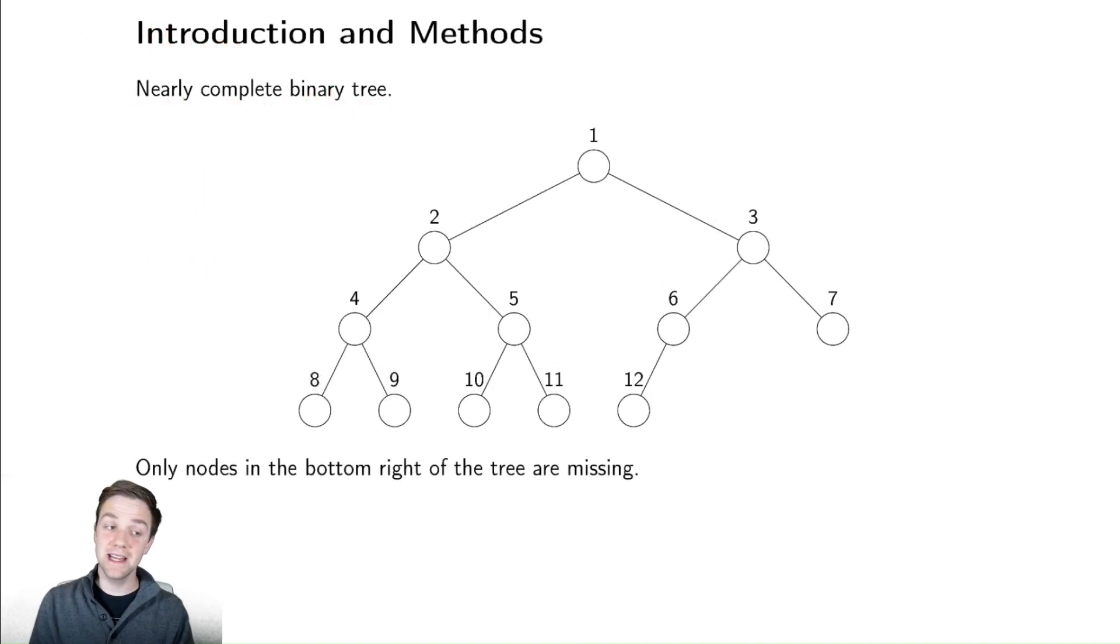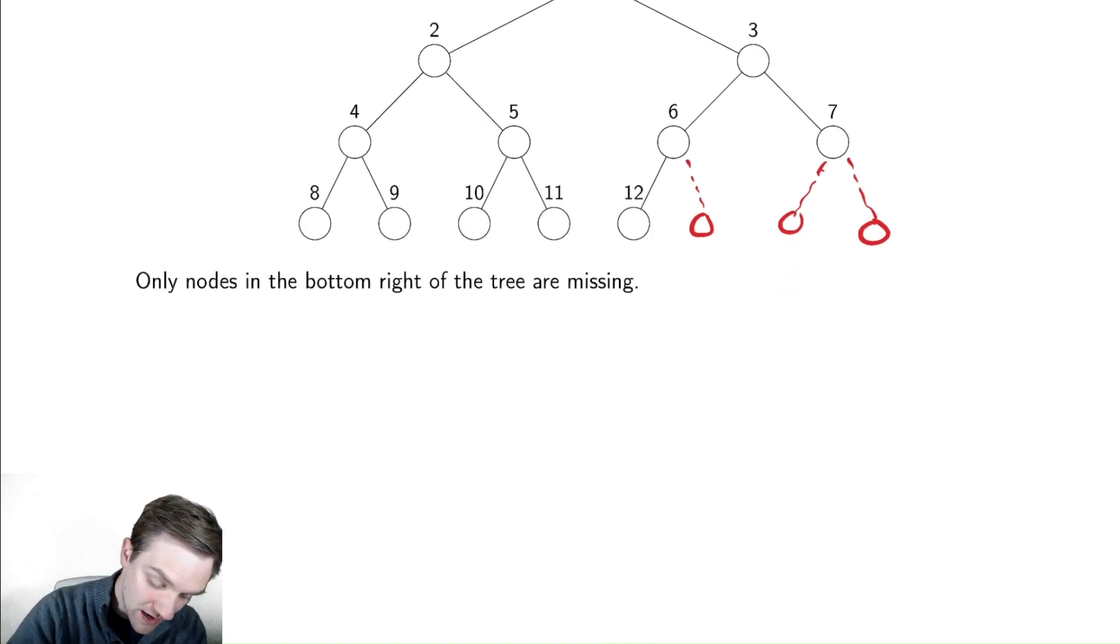I said that a heap is a nearly complete binary tree, meaning that we are only missing children in the bottom right. A very reasonable question might be do we have any understanding on how the number of elements in the heap, the number of nodes, in this case 12, relates to the height of the tree. I will actually do this by bounding the number of elements by pretending in my upper bound like the tree is completely full. This will provide an upper bound. So the number of elements n, that is the number of elements.